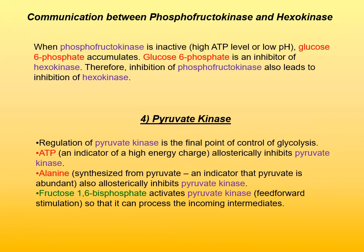Pyruvate kinase is the final regulation point of glycolysis. ATP, which is an indicator of high energy charge of the cell, allosterically inhibits pyruvate kinase. Also, the amino acid alanine, which is synthesized from pyruvate and is an indicator that pyruvate is abundant, also allosterically inhibits pyruvate kinase. On the other hand, fructose-1,6-bisphosphate activates pyruvate kinase — that is an example of feedforward stimulation. The reason fructose-1,6-bisphosphate activates pyruvate kinase is so that all of the intermediates down the pathway from fructose-1,6-bisphosphate to pyruvate can be processed and don't accumulate.